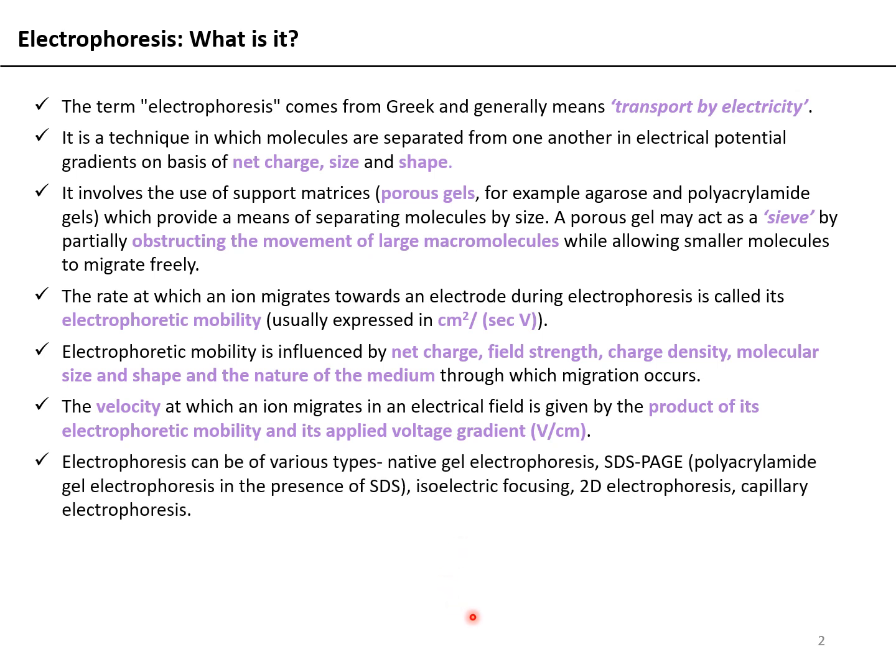Electrophoresis can be of various types: native gel electrophoresis, SDS-PAGE, isoelectric focusing, 2D electrophoresis, or capillary electrophoresis. We will be dealing with each one of these one by one. Electrophoresis in general has wide applications in chemistry, biology, as well as in molecular biology.